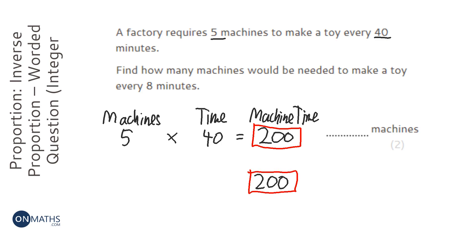So it says we want to do it in 8 minutes. So I've got to think what times 8 is 200, because machine time would always be the same. So I get my calculator and I'm going to do 200 divided by 8 and it's 25.